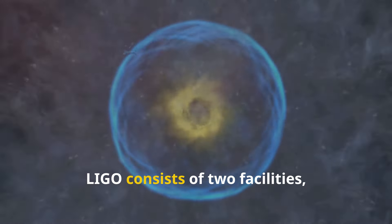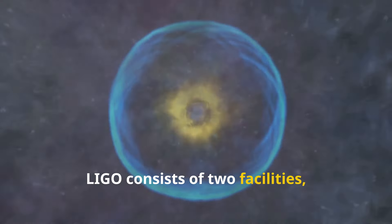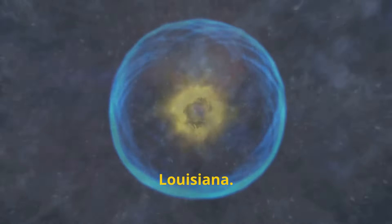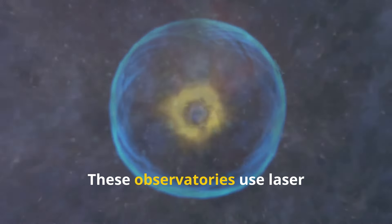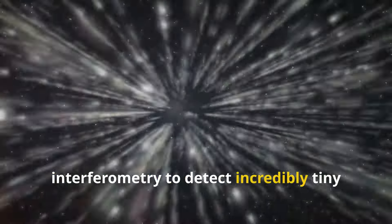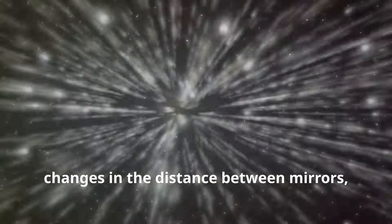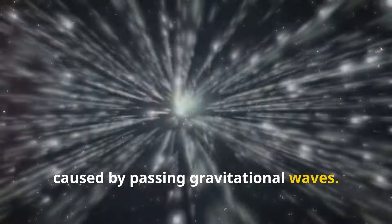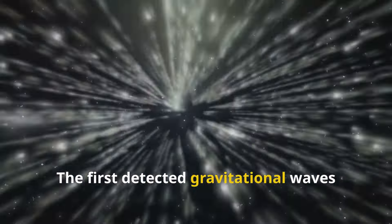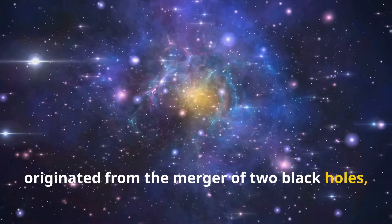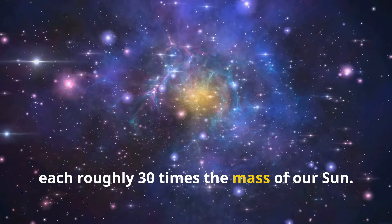LIGO consists of two facilities, one in Hanford, Washington, and the other in Livingston, Louisiana. These observatories use laser interferometry to detect incredibly tiny changes in the distance between mirrors caused by passing gravitational waves. The first detected gravitational waves originated from the merger of two black holes, each roughly 30 times the mass of our Sun.